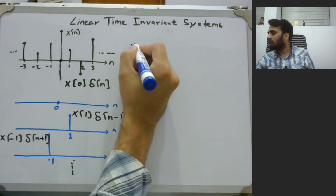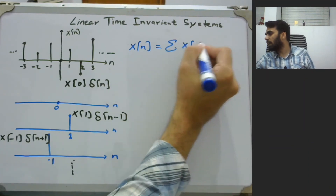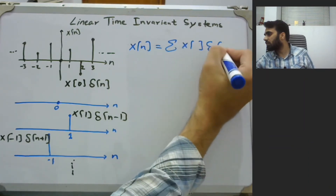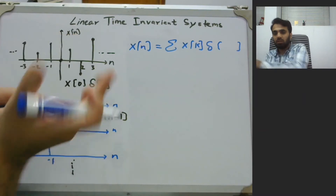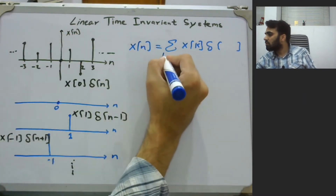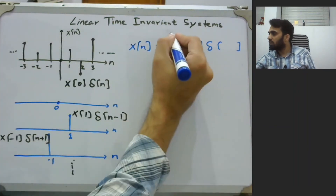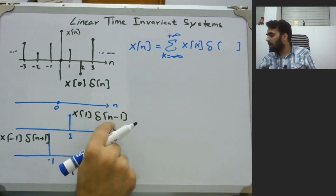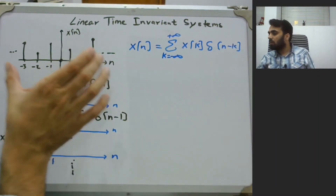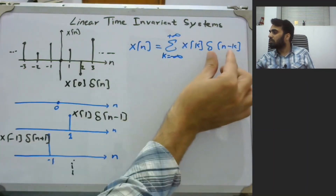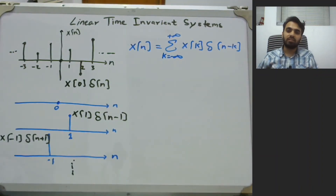Therefore we can write x(n) as a sum of shifted impulses: x(n) = Σ x(k)·δ(n-k), where the summation runs from k = -∞ to +∞. By summing all of these shifted, weighted impulses together we reconstruct x(n). This result is known as the shifting property.